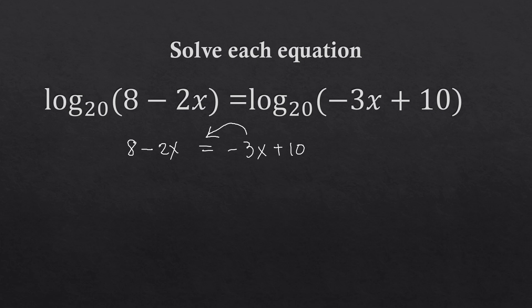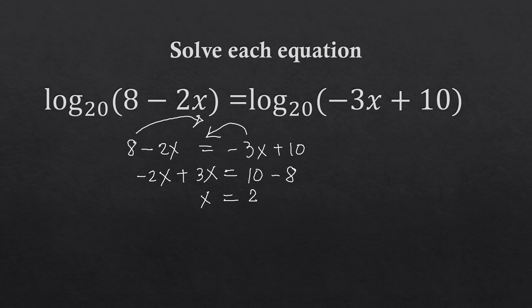We move negative 3x to the left side, becoming plus 3x, and move 8 to the right side, becoming minus 8. So we have negative 2x plus 3x, which equals x, and that equals 10 minus 8, which is 2. So our value of x in this example is 2.